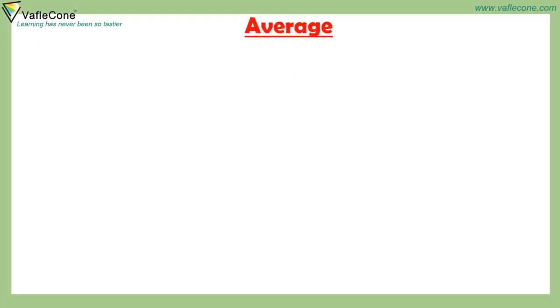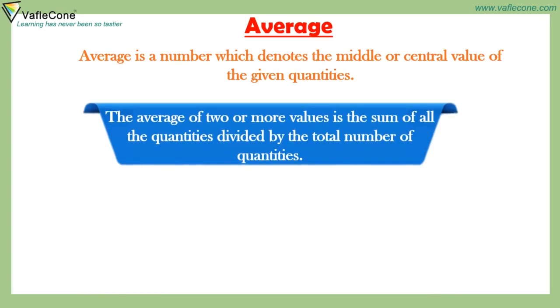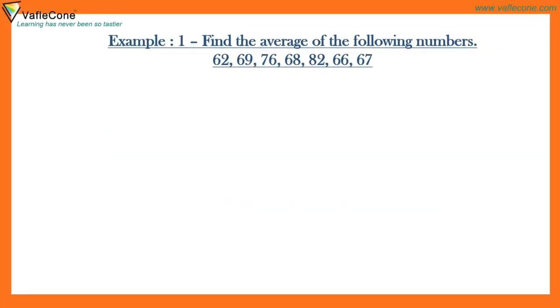Average. Average is a number which denotes the middle or central value of the given quantities. The average of 2 or more values is the sum of all the quantities divided by the total number of quantities. Average equals sum of all the quantities divided by total number of quantities. Example: